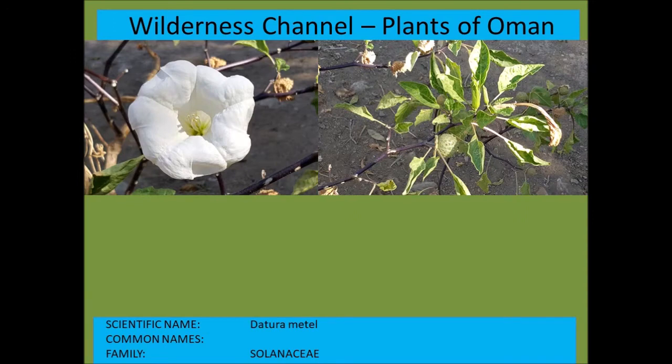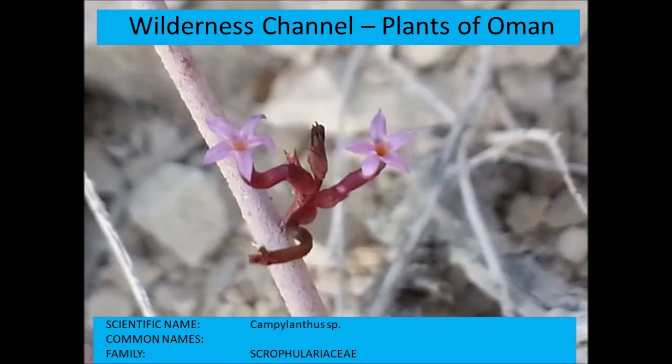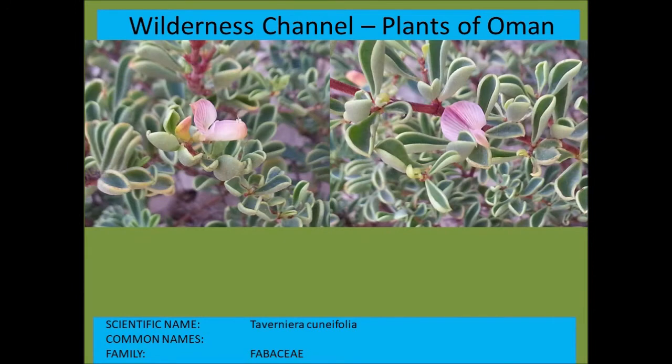Datura metel — you can see the tube-like flower with a long base. And Taverniera cuneifolia from the Fabaceae — a pretty little bush very similar to Indigofera.